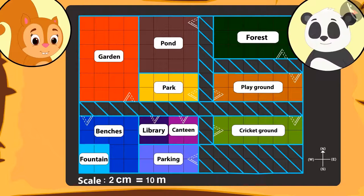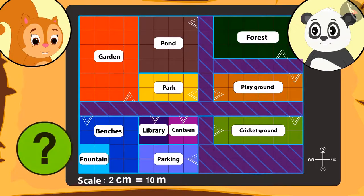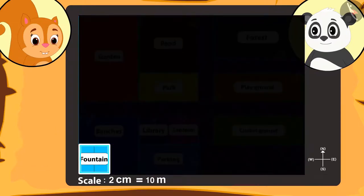Chanda tells Goliath that she can spot roads everywhere — there is at least one road near every place. Then Goliath tells her there is one place besides which there is no road. Can you find that place on the map? That's right! There is no road near the pond.